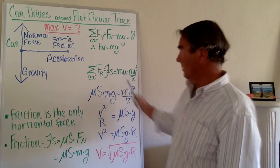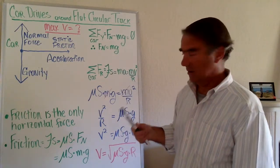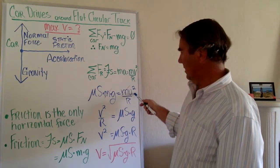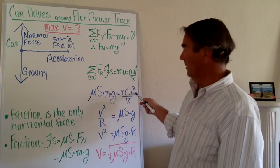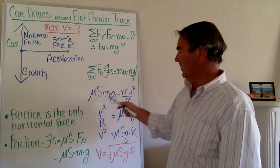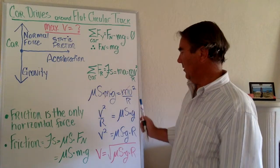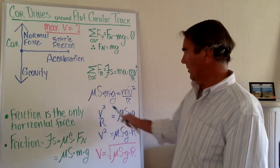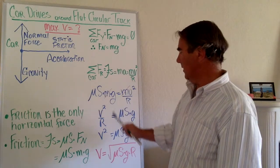The question is: what is the maximum speed the car can go before starting to skid? Algebraically, we isolate velocity. Mass exists on both sides and cancels out, leaving v² over r equals the coefficient of static friction times gravity.